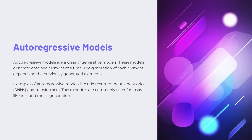Autoregressive models are a class of generative models that generate data one element at a time, where each new element depends on the previously generated ones. Examples include recurrent neural networks, RNNs, and transformers, which are commonly used for tasks like text and music generation. These models can capture complex dependencies in sequential data, allowing them to generate coherent and realistic outputs. The key idea is that they build the output incrementally, conditioning each new element on the previous ones, making them well-suited for tasks like language modeling and audio synthesis.